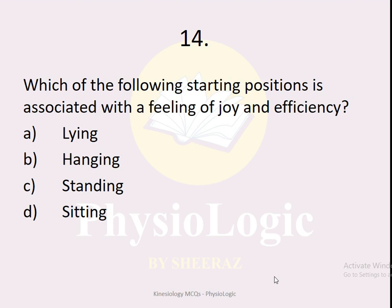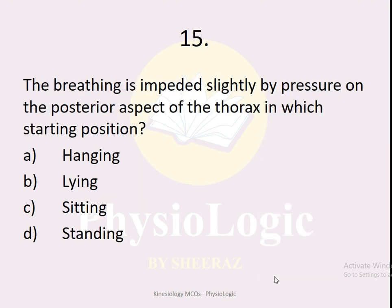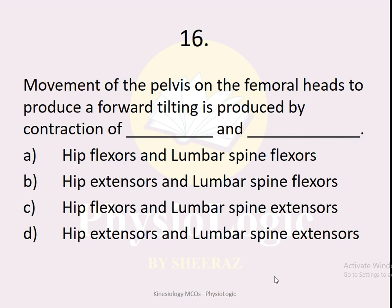MCQ number fourteen: which of the following starting positions is associated with a feeling of joy and efficiency? The correct option is standing. MCQ number fifteen: breathing is impeded slightly by pressure on the posterior aspect of the thorax in which starting position — hanging, lying, sitting, or standing? The correct option is lying. In the lying position, breathing is impeded due to pressure on the posterior thorax. An important point: for breathing problems, the best recommended position is the half-lying position.